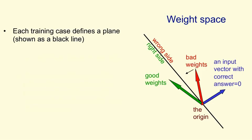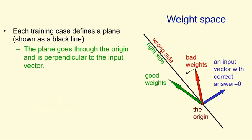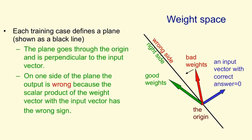Conversely, any input vectors on the other side of the plane will have an angle of greater than 90 degrees, and they will correctly give the answer of 0. So as before, the plane goes through the origin, it's perpendicular to the input vector, and on one side of the plane all the weight vectors are bad, and on the other side they're all good.